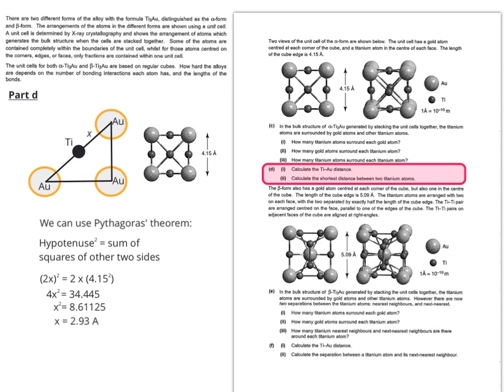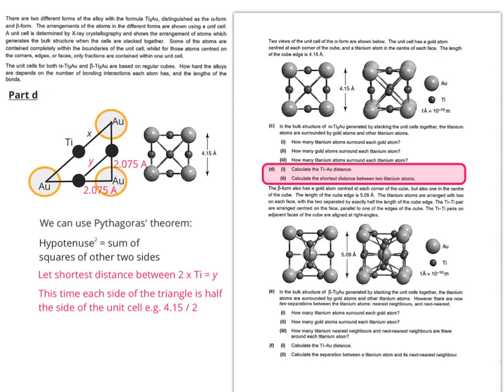The A with a little circle above it is a unit we use to measure very small distances. 1 angstrom equals 10 to the minus 10 metres. The shortest distance between two titanium atoms can be considered as y. This time each side of the triangle is half the side of the unit cell, 4.15 divided by 2, which makes 2.075 angstroms. If we're trying to work out y, we take 2.075 squared plus 2.075 squared, applying Pythagoras again, and that gives us y equals 2.93 angstroms.